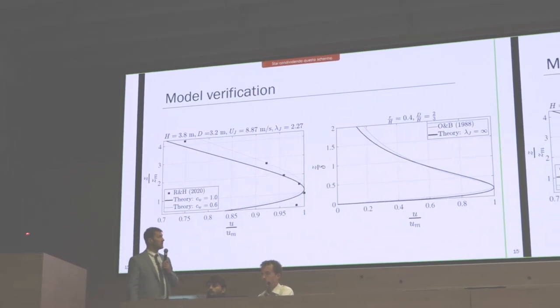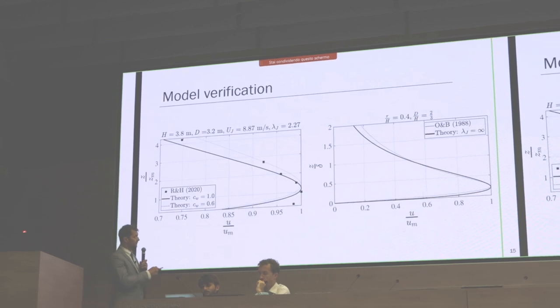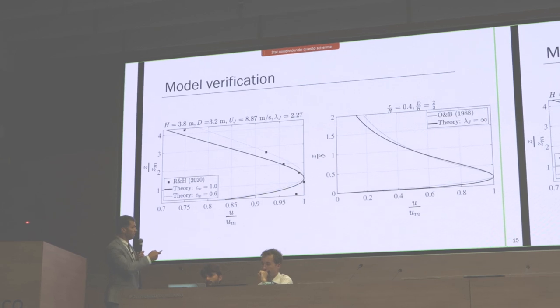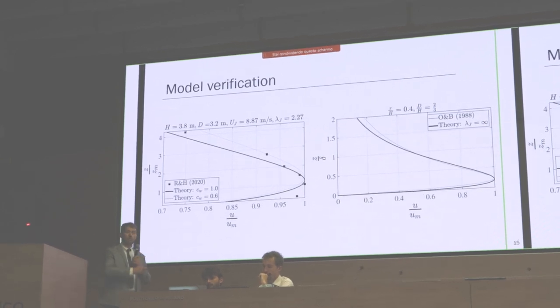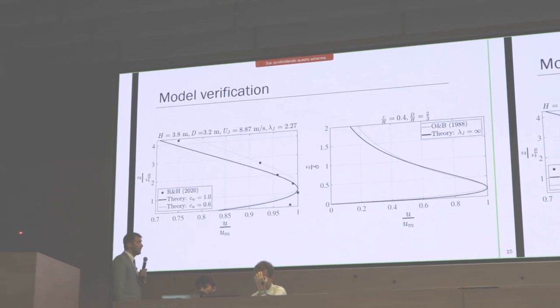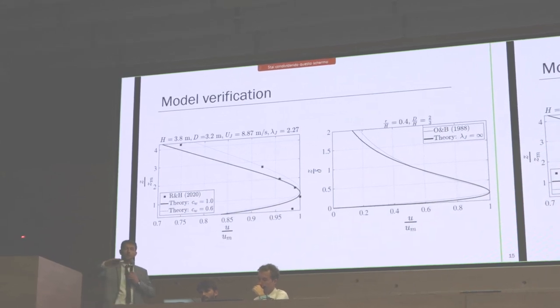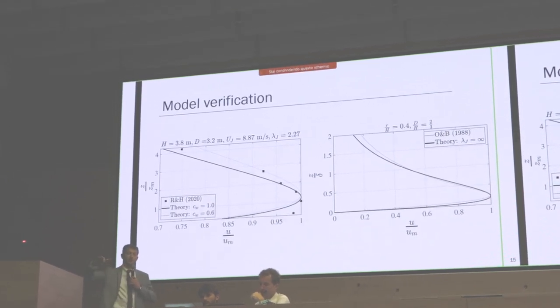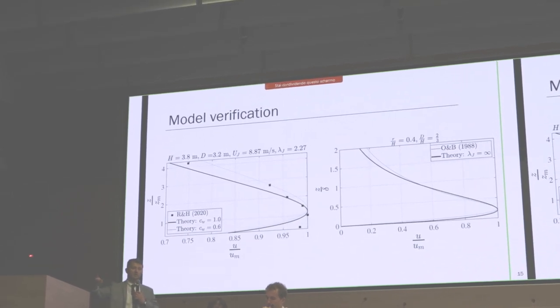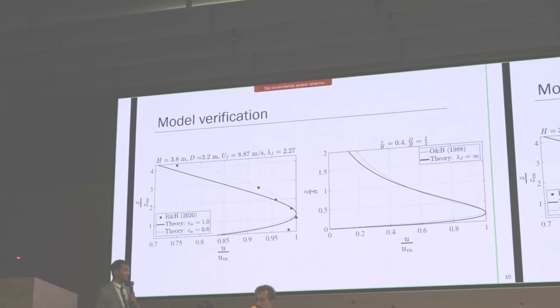I think this is the last comparison. This comparison of our model without ABL winds, so lambda J is infinity, and the most famous model I would say of Vicroy and Balls from 1988, we see that the models are similar but there are some differences. One of the differences is in our model we have the spreading rate of the jet and the height of maximum velocity changes with distance from the downdraft. In their model, that was constant. That is just one of the differences.